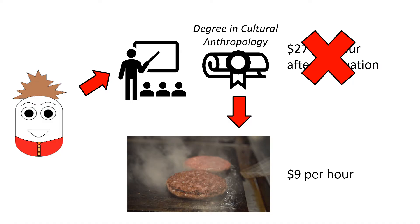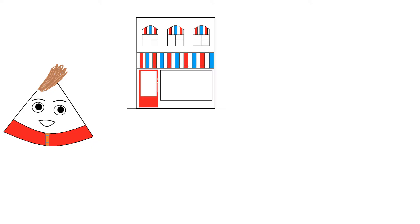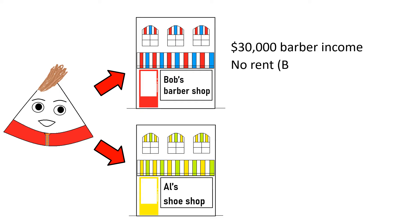Opportunity cost does not just apply to time — it can also apply to assets. Here's Tim's big brother Bob. He's got it together. Bob owns a small retail building. He could use the building to set himself up as a barber, or he could rent out the building to Al, who wants to start a shoe shop. Bob has to make up his mind between two alternatives: using the building himself, which gives him the opportunity to earn an income of $30,000 per year as a barber, or renting out the building to Al for $40,000 per year.